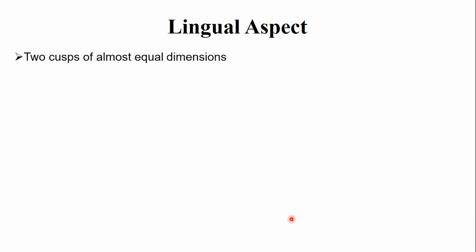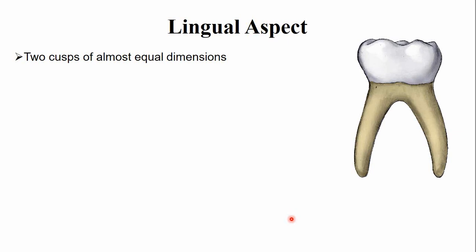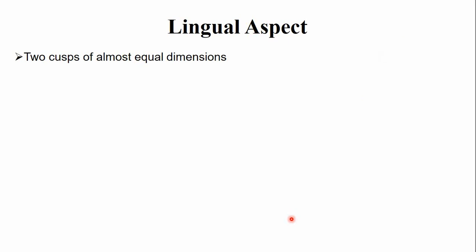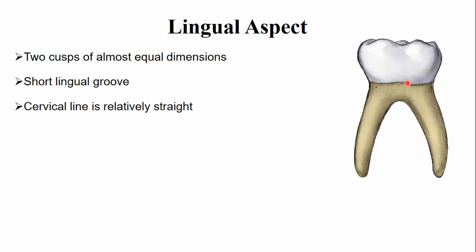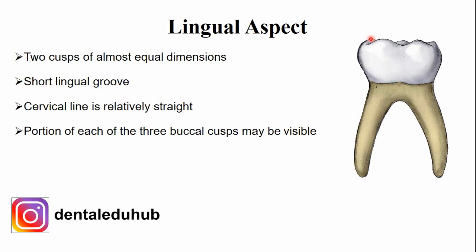From the lingual aspect, there are two cusps — compared to the three cusps on the buccal aspect. These two cusps are equal in dimensions: the mesio-lingual cusp and the disto-lingual cusp. In between them, there is a short lingual groove. The cervical line from mesial to distal side is nearly straight. Portions of the mesio-buccal, buccal, and disto-buccal cusps are visible from the lingual aspect.